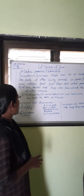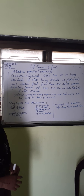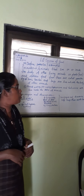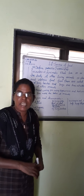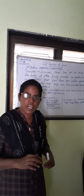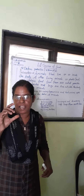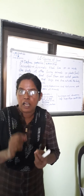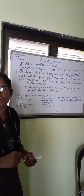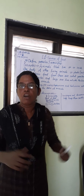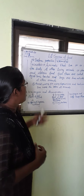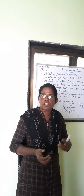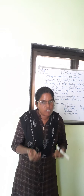What is a parasite? A parasite is an animal that lives on or inside the body of other living animals or plants, and obtains food from them — these are called parasites. Some very small animals live inside living organisms, even inside our human body.